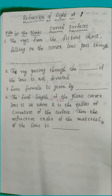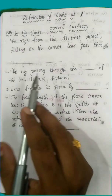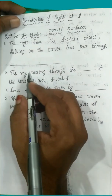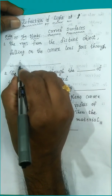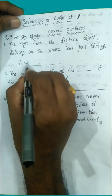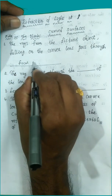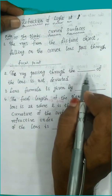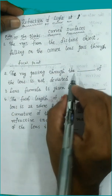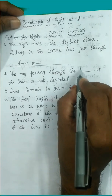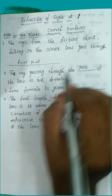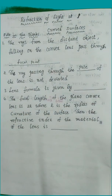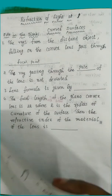I would like to go through some key rules. Rays from a distant object falling on a convex lens pass through the focal point. The ray passing through the center of the lens is not deviated — that center point is called the pole.